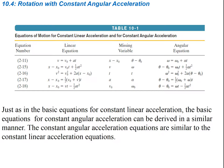Let's look at our constant acceleration equations for rotation. This chart shows the correlation between linear and angular equations. All we're doing is taking the linear equations and replacing linear terms with angular terms. For instance, the equation for final velocity: final linear velocity becomes final angular velocity, initial linear speed becomes initial angular speed, linear acceleration becomes alpha (angular acceleration), and time stays the same. You get all of these kinematic equations now usable in angular terms.